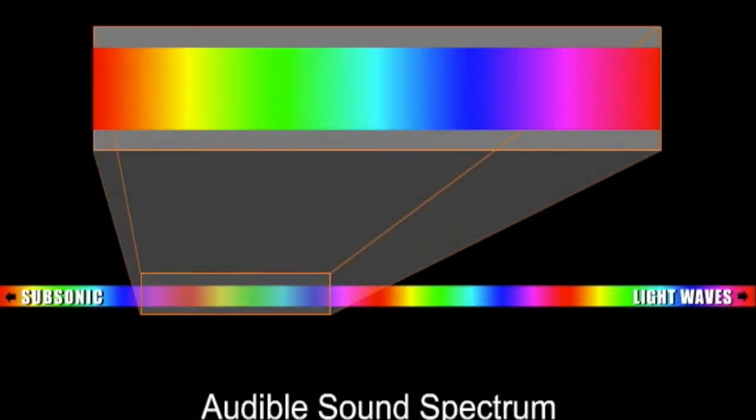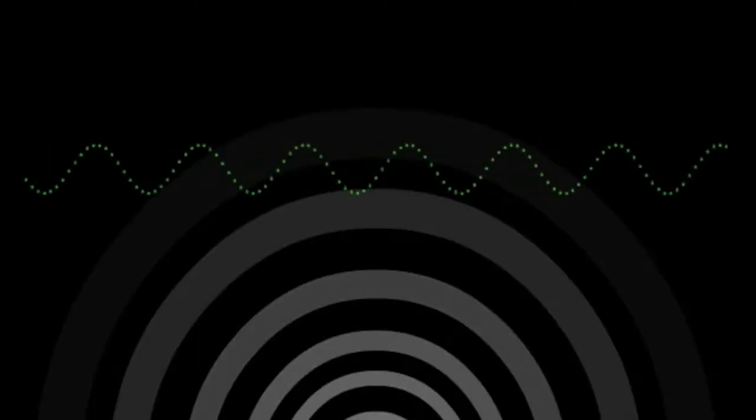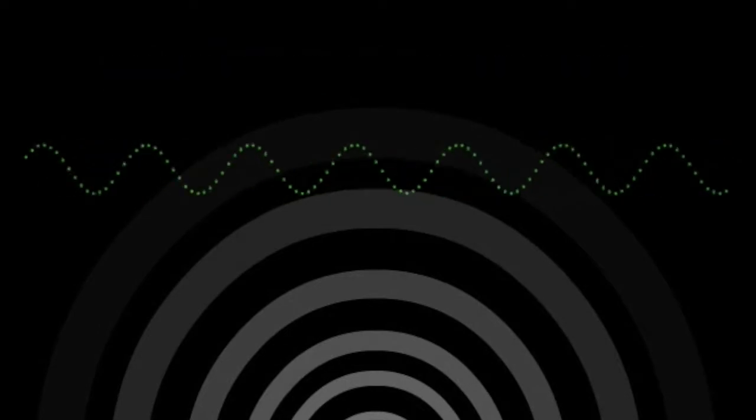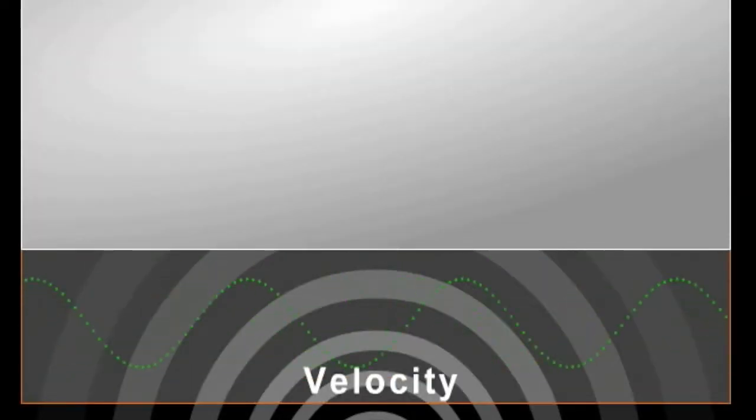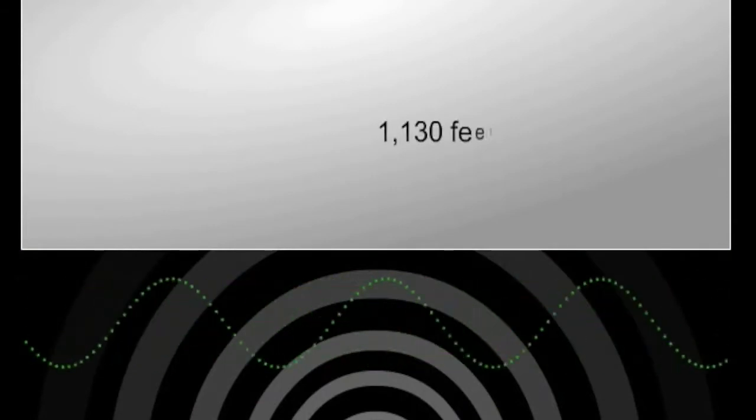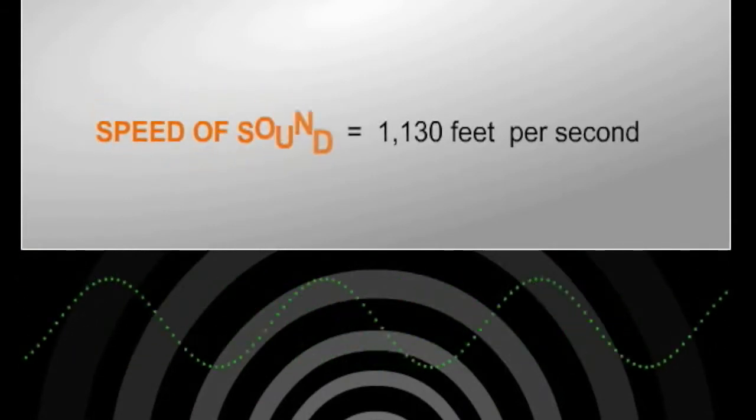The human ear is capable of detecting the frequencies between 20 and 20,000 hertz, or 20 kilohertz. The speed of sound is the rate at which sound waves propagate. We call this rate velocity. As a base unit, we will use 1130 feet per second as the speed of sound.